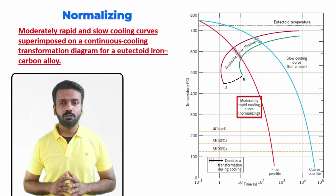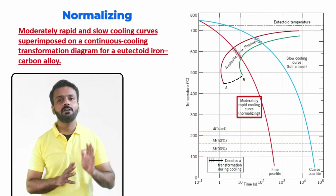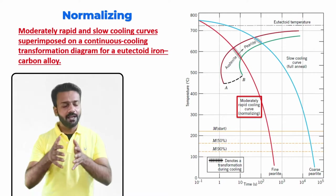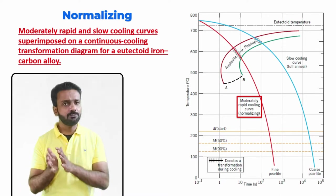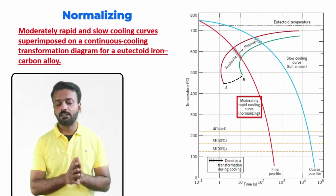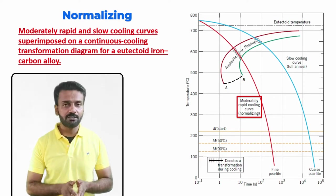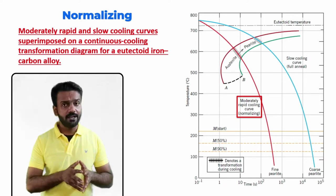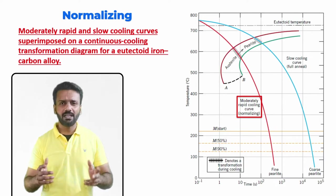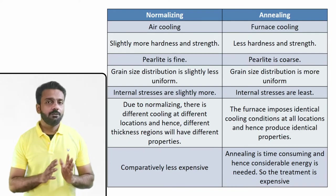This is a continuous cooling transformation (CCT) diagram with cooling curves superimposed on it. When cooling very slowly, we get the annealed condition with coarse pearlite, as seen in the earlier video. When cooling the material in air, as in normalizing, the time taken is less and the structure obtained is finer. A finer structure means smaller grains and slightly greater strength compared to annealed steel.